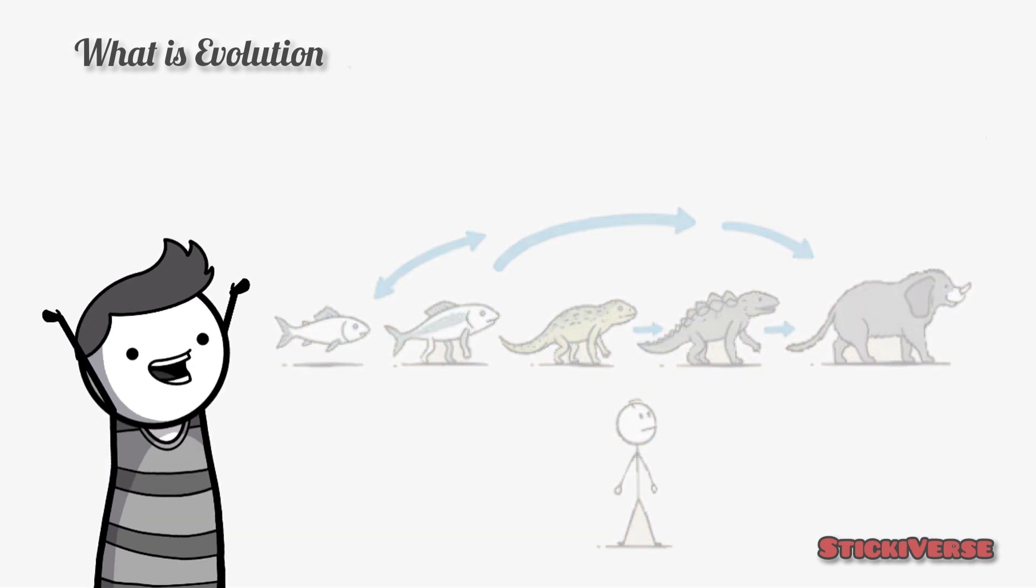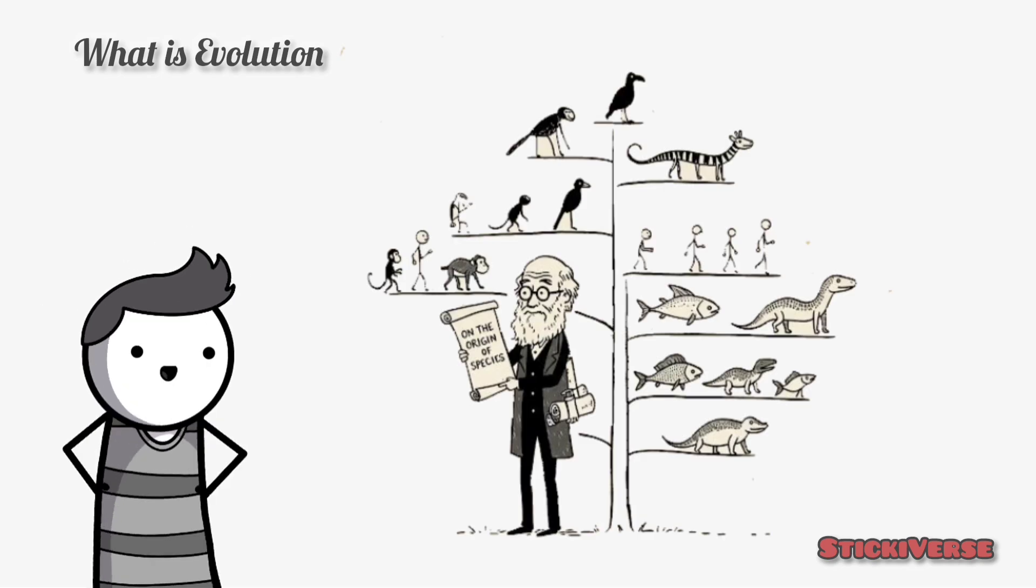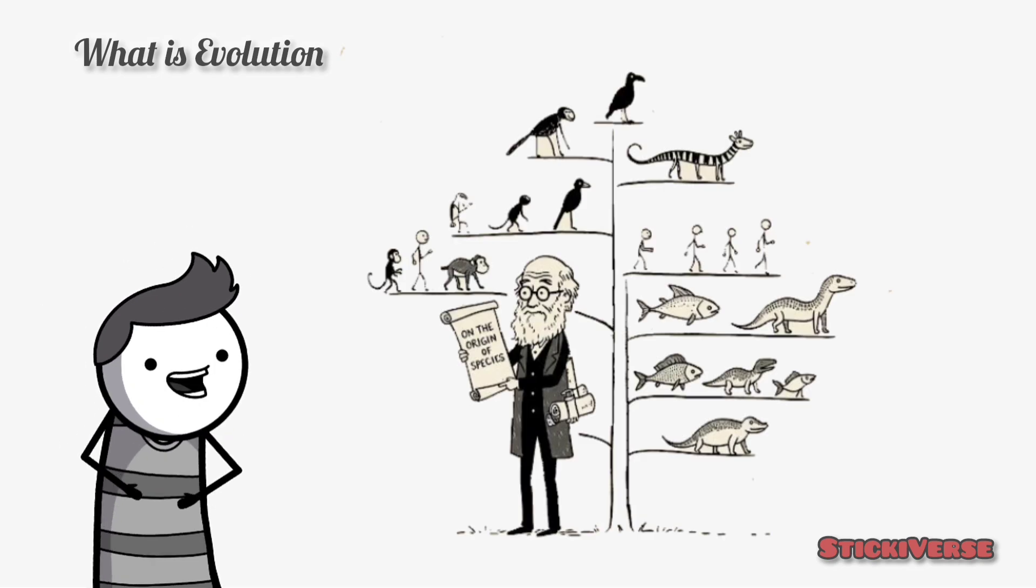The theory of evolution, first introduced by Charles Darwin, explains that all living things are descended from a common ancestor.